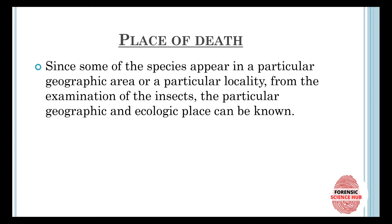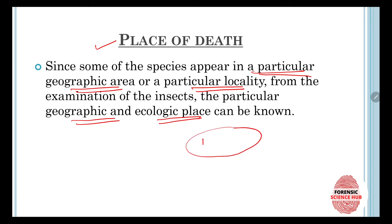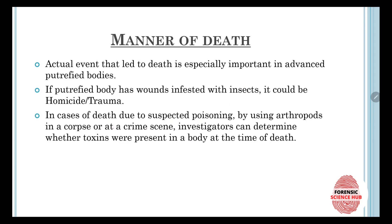Forensic entomology can also help us determine the place of death. Since some species appear only in a particular geographical area or locality, examination of the insects can reveal the geographical and ecological place associated with the body. If an insect found on a dead body is known to exist only in a particular area, we can determine that the body must have been present in that area.